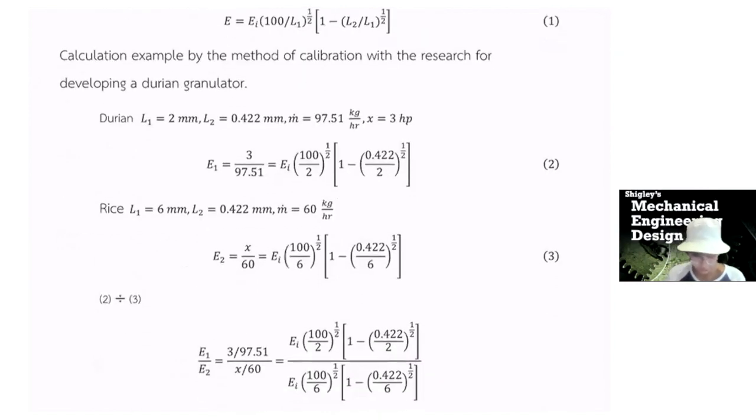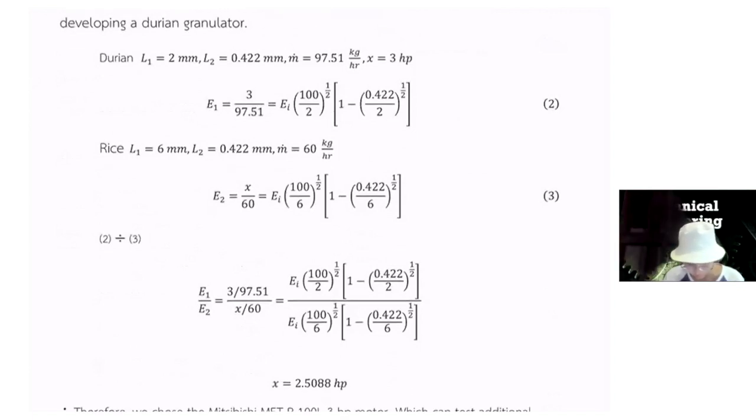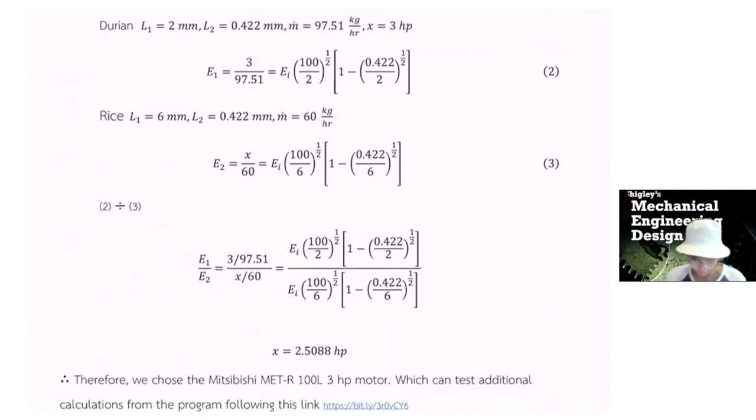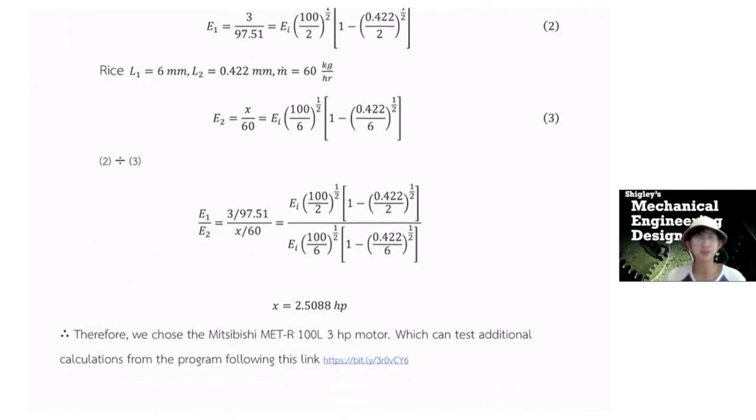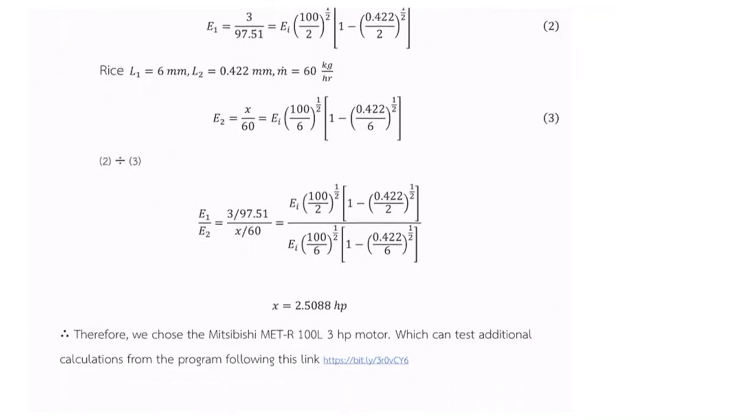So we compare it with the durian granulator. We have a L1 of 2 millimeter and the output is 0.4 to 2 millimeter. And the mass forward is 97. We have the more mass forward than our machine. So we compare it by E1 by E2, and we calculate the 2.5 horsepower. But in the real life, it cannot have that horsepower for the model. So we select the Mitsubishi 3 horsepower model.